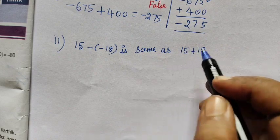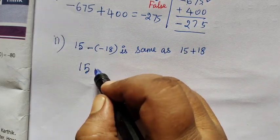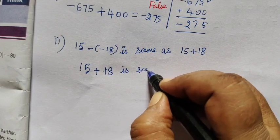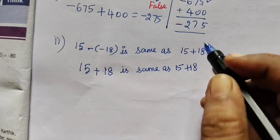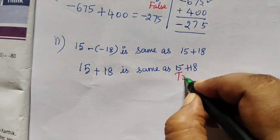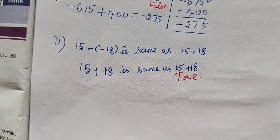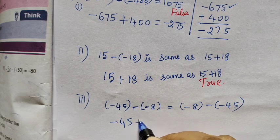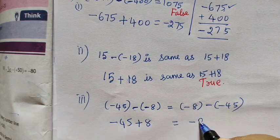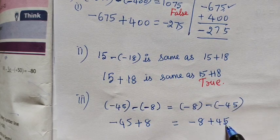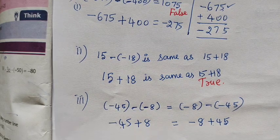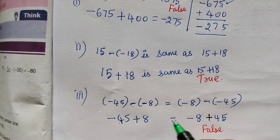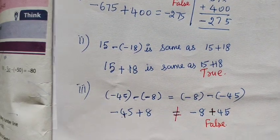Next: 15 minus of minus 18 is the same as 15 plus 18. Minus times minus equals plus, so the sign is the same as 15 plus 18. Your number is equal to 33. So this is true. Here, minus 45, minus minus minus gives plus. But minus minus minus minus minus plus 8: the answer equals 0, so this is false. It is not equal, so it does not work. So this is false.